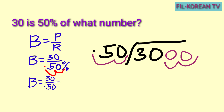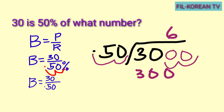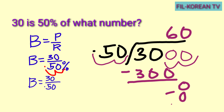Pwede na tayong mag-divide. I-divide natin yung first 3 digits — yung 300 — kasi yung 30 ay mababa sa 50, kaya hindi siya pwede. Tuloy tayo sa 300. 300 divided by 50 equals 6. 6 times 50 equals 300. Subtract: 300 minus 300 equals 0. Bring down the next digit 0. 0 divided by 50 equals 0. 0 times 50 equals 0. 0 minus 0 equals 0. Ang answer natin ay 60. So, 30 is 50% of 60.